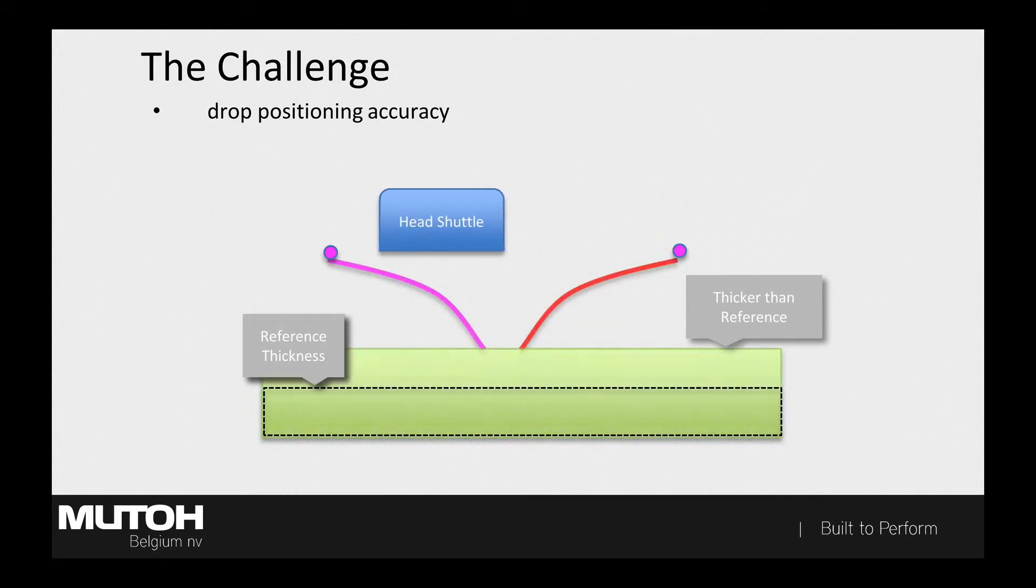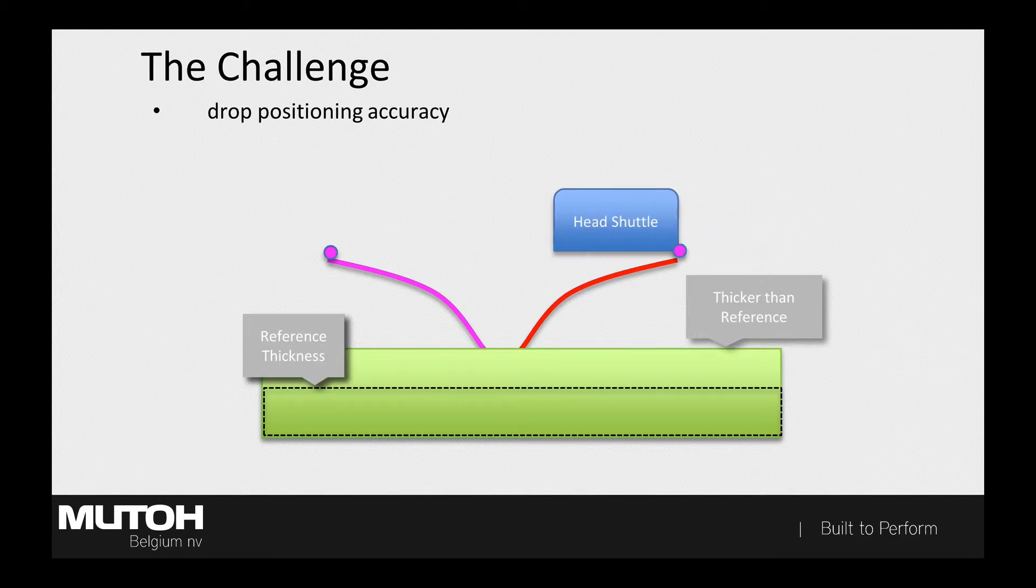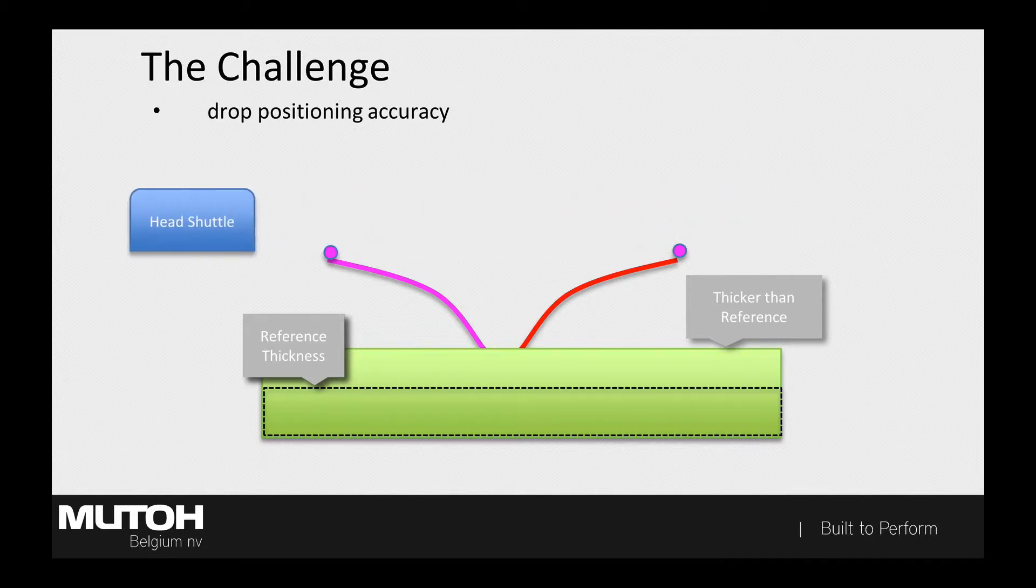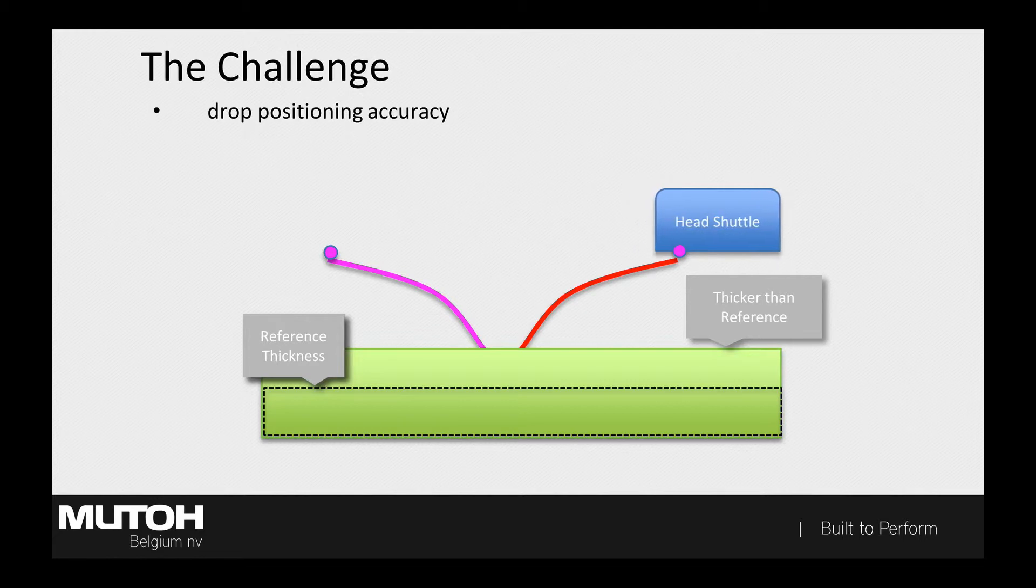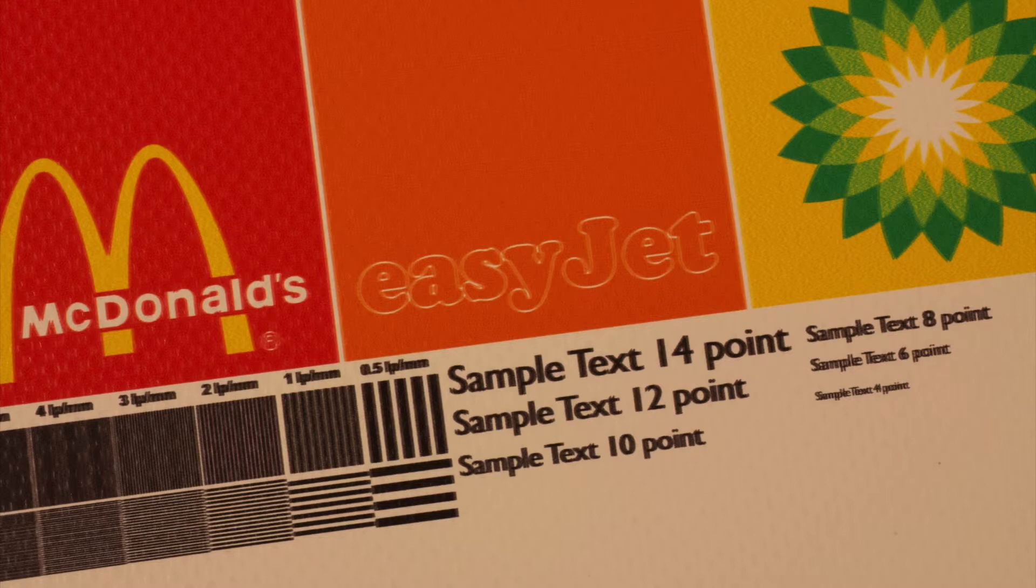A similar error would happen when you print on thicker media. In this case, the drop throw distance becomes shorter and the traveling time of the drop gets shorter with it, causing the unidirectional target to shift a little to the right because the drops hit the media earlier. The same goes for the bi-directional timing. The drop lands earlier on the media, and just like with the thinner media, the uni and bi-directional drops are positioned apart. Also in this case, we will be facing a loss of detail and image smoothness.